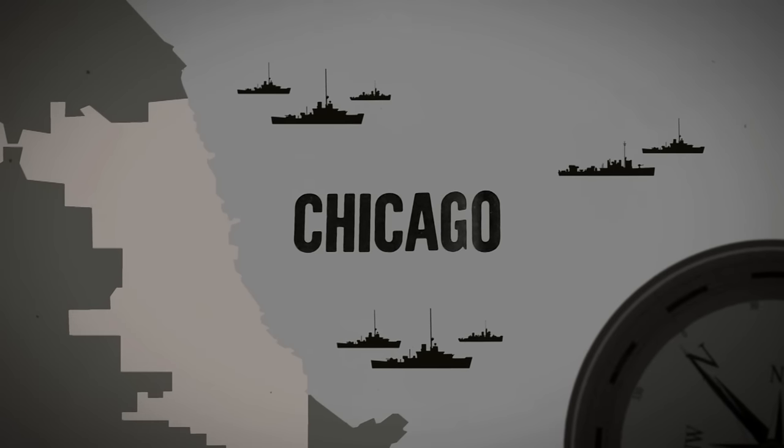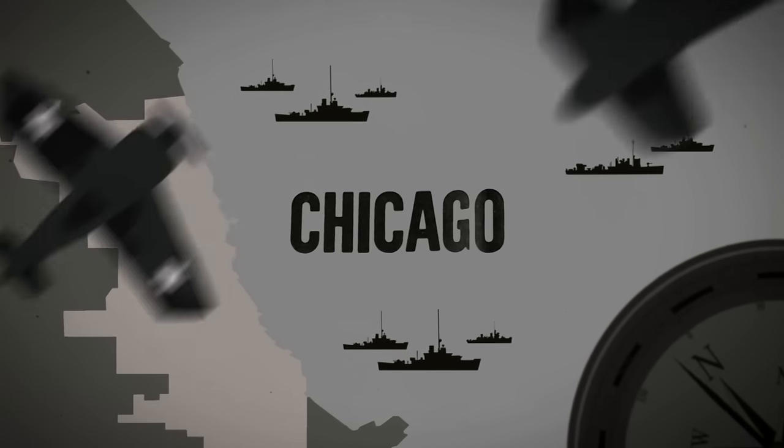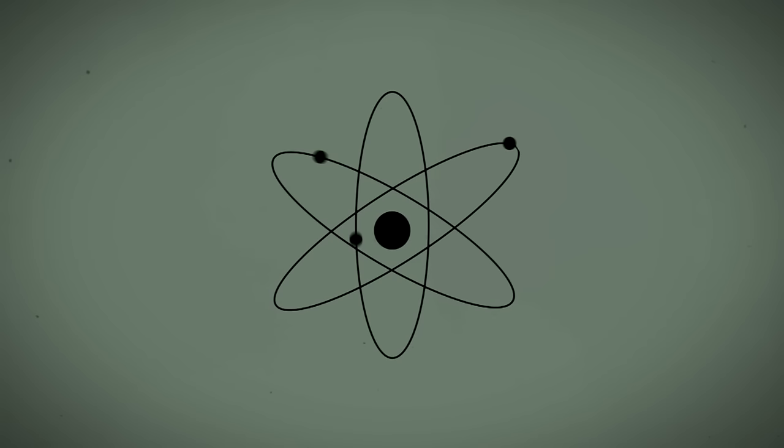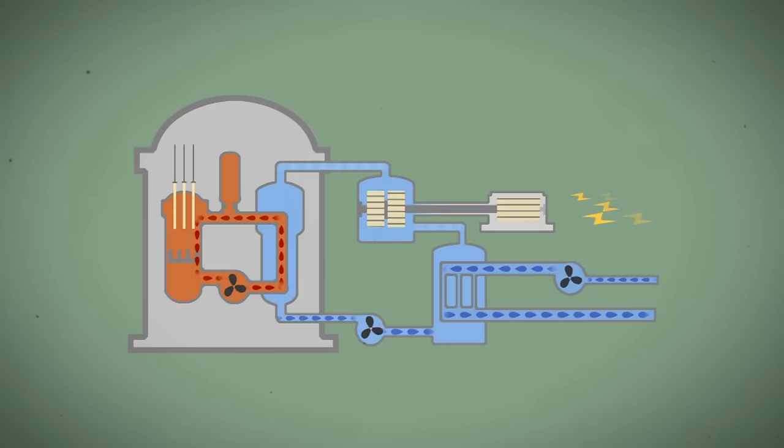On a December afternoon in Chicago during the middle of World War II, scientists cracked open the nucleus at the center of the uranium atom and turned nuclear mass into energy over and over again. They did this by creating for the first time a chain reaction inside a new engineering marvel, the nuclear reactor.